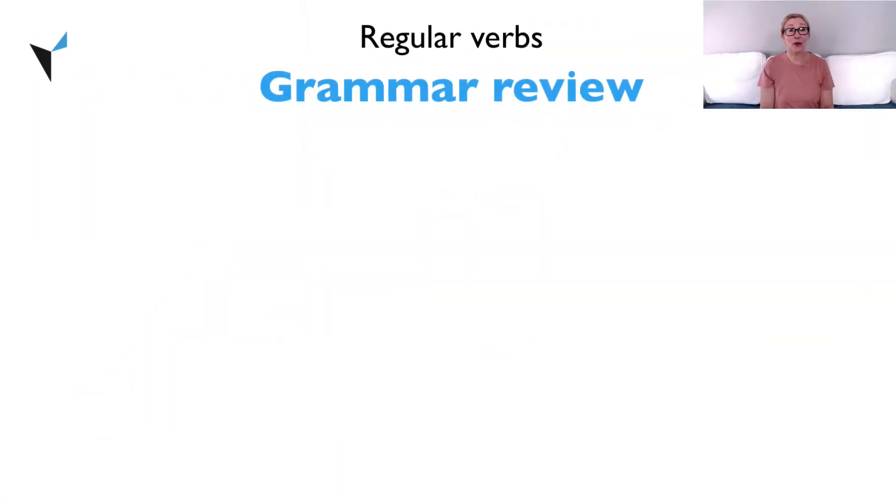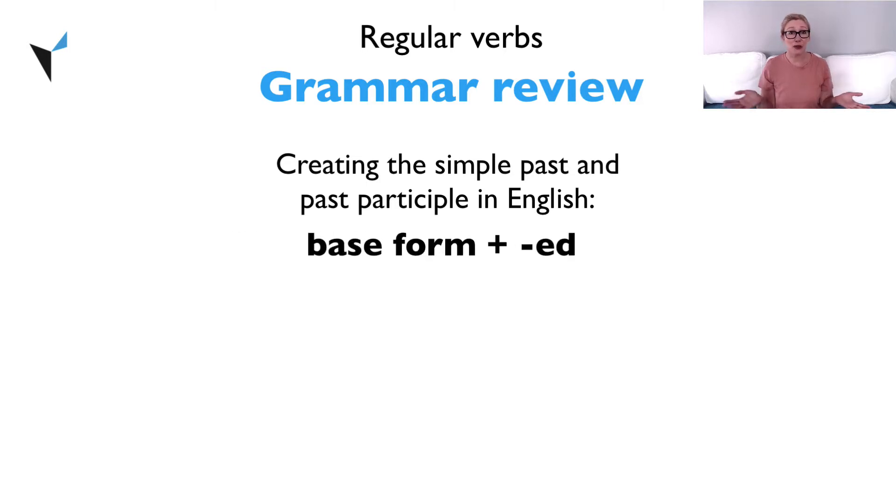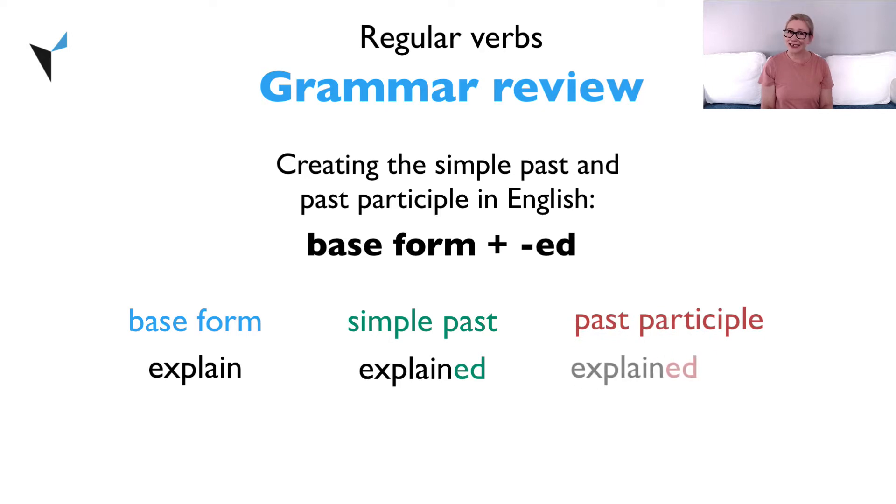Let's start with a quick grammar review. To create simple past and past participles in English, we typically add the ending ed to the base form. Let's use the verb explain as an example. The simple past is explained and the past participle is explained. Grammar rules are not always as straightforward as we would like them to be. To help you out, I'm going to give you 20 common irregular verbs and show you how to use them correctly.